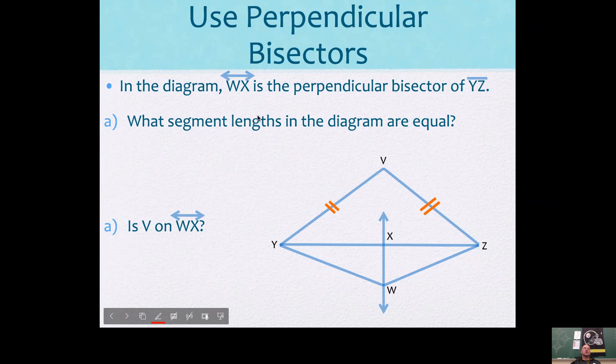Let's use perpendicular bisectors. In this diagram, line WX, that's this one, is the perpendicular bisector of segment YZ. So we know that's a right angle. We know these are congruent. What segment lengths in the diagram are equal?